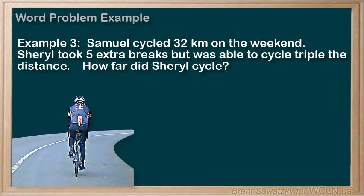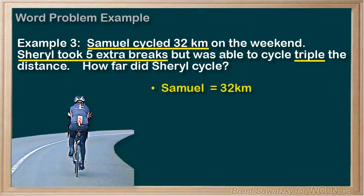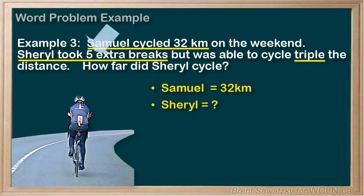Step 2: Organize. Let's get into the details. Samuel cycled 32 kilometers. Cheryl took five extra breaks but cycled triple the distance. Let's make our notes here. Samuel equals 32 kilometers. Cheryl equals — well, that's our unknown. We know she took five extra breaks, but that doesn't seem to matter to our problem, so we'll skip that. We also know that Cheryl's distance is triple Samuel's distance.